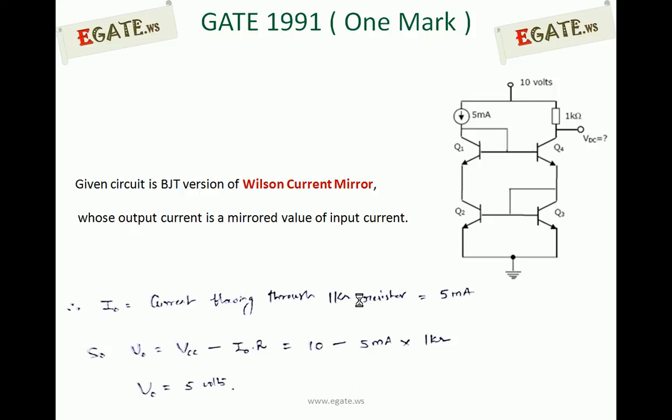As the name implies, current mirror means the output current is a mirrored version of input current. Since all transistors are identical, output current mirrors the input or reference current. In the circuit, 5 mA is the reference current that flows through the Q1 transistor because the beta value is very large.